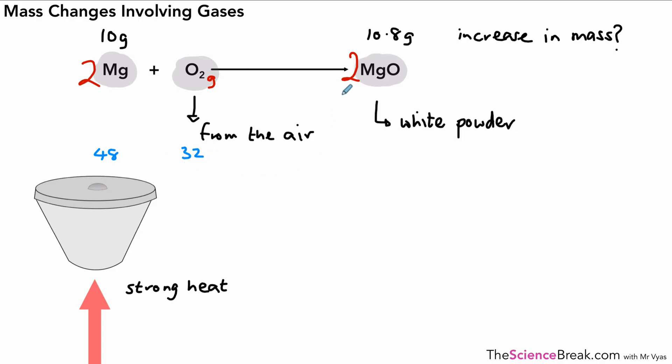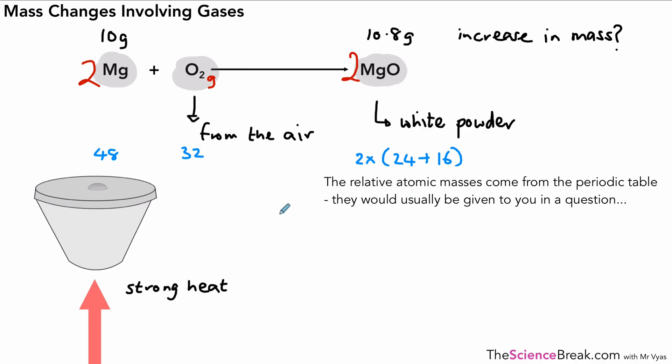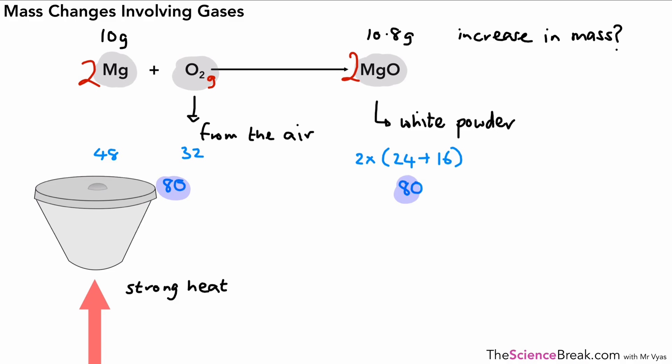If we balance the equation and include all reactants: the relative formula mass of magnesium (2Mg) is 48, oxygen (O₂) is 32, and magnesium oxide (MgO) has a formula mass of 24 + 16 = 40, so 2 × 40 = 80. Adding the formula masses for magnesium and oxygen also gives 80 — conservation of mass is confirmed. So those are two ways you might be confused: when a gaseous product escapes or when a gaseous reactant is invisible. We must be careful in those scenarios.